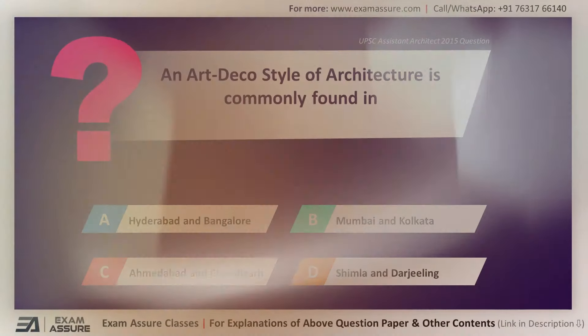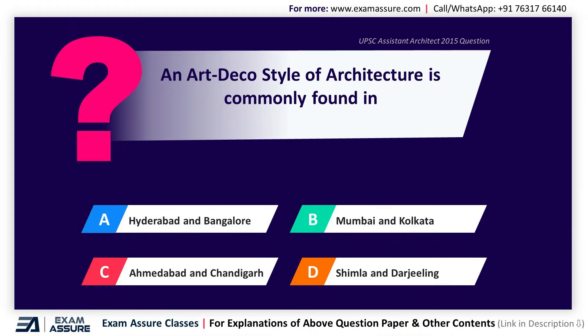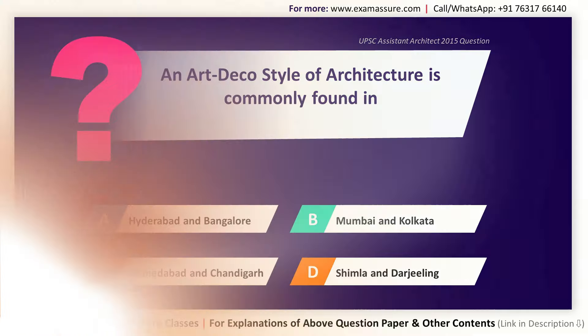Next question. Art Deco style of architecture is commonly found in — Option A: Hyderabad and Bangalore, Option B: Mumbai and Kolkata, Option C: Ahmedabad and Chandigarh, Option D: Shimla and Darjeeling. The correct answer is Option B, Mumbai and Kolkata.